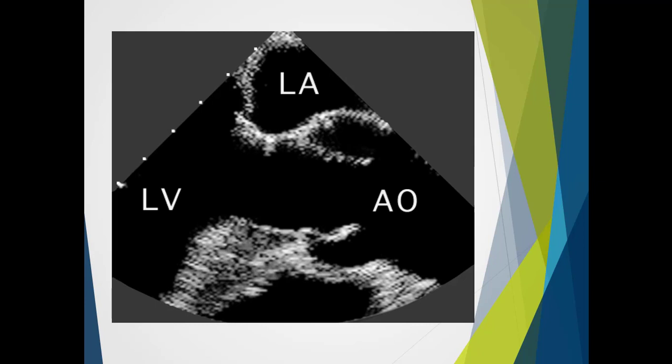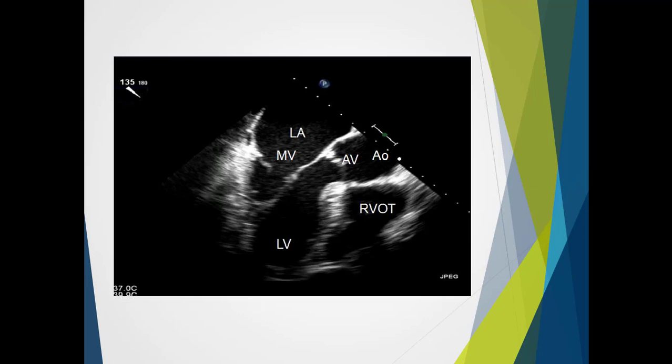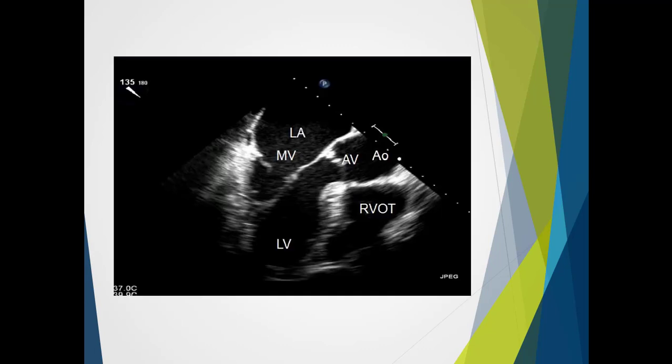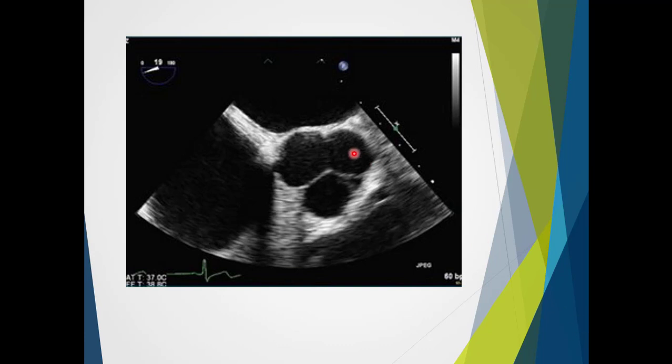With the valve open, we can see the leaflet excursion is normal. Removing the zoom view, it looks very much like an upside-down apical long axis view. The transoesophageal short axis view is basically a mirror image of the parasternal short axis, with the right ventricular outflow tract demonstrated towards the bottom of the image. The non-coronary leaflet again sits over the atrial septum, the right coronary will be the deepest in the image, and the remainder is the left coronary leaflet. As with transthoracic imaging, the operator pulls back the probe slightly to pan through the valve and then does the same with colour. In the transoesophageal short axis image, the non-coronary leaflet is associated with the atrial septum, the left atrium, right atrium, right ventricle, and pulmonary valve are visible at the bottom, with this being the right coronary cusp.